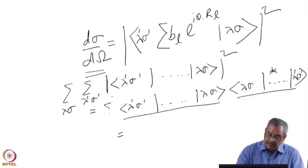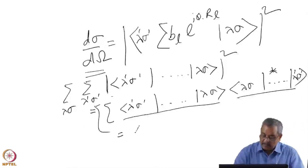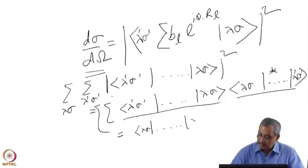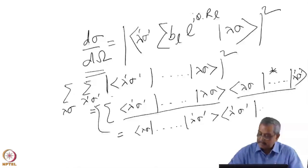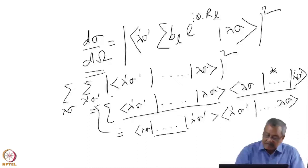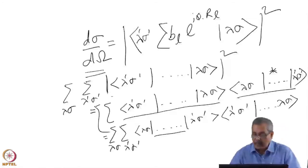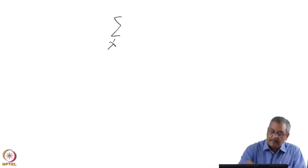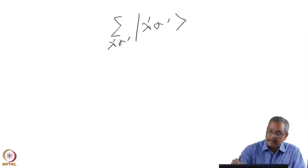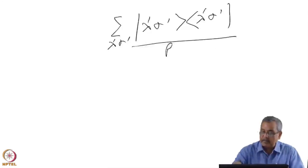The complex conjugate will be lambda-prime sigma-prime, so I can move them around and write this equal to — the double summation remains — and I can write it as lambda sigma, then lambda-prime sigma-prime, and I bring this bracket to this side. I then have lambda-prime sigma-prime as complex conjugate, and then lambda sigma, with the summation over lambda sigma and lambda-prime sigma-prime.